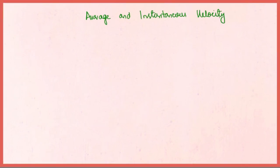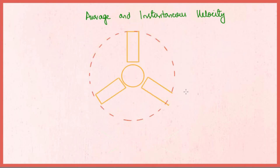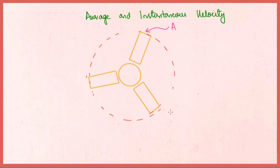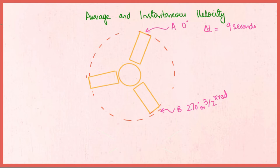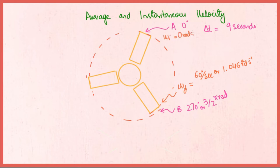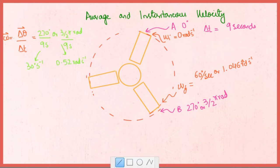Now let's understand the concept of average and instantaneous angular velocity. Consider the angular motion of a fan. At rest, let its initial position be A. As the fan is turned on, it changes its position and undergoes angular displacement to reach point B at 270 degrees, or 3/2 pi radians. Let the final angular velocity of the fan be 60 degrees per second or 1.046 radians per second, and the initial angular velocity be 0. Angular velocity would be delta theta over delta t, which is 270 degrees over 9 seconds, giving 30 degrees per second or 0.52 radians per second.